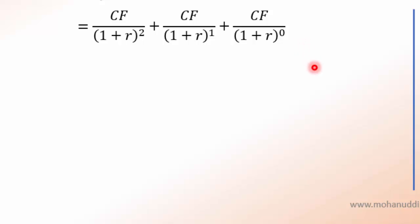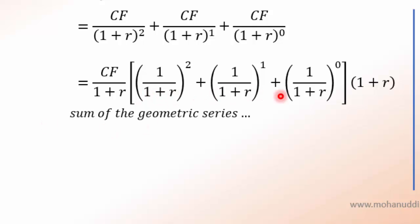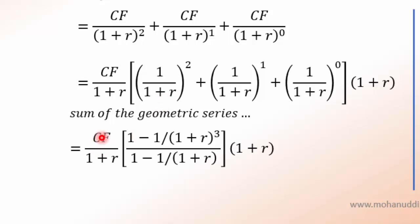What we can do is take a common factor of CF/(1+r) and also (1+r). We are using a little trick so that we can get a similar series to what we obtained when deriving the formula for present value of an ordinary annuity. You can see that this series is the same as what we got for an ordinary annuity. Using the formula for the sum of a geometric series for this portion, the expression becomes CF/(1+r) times (1+r), and this part becomes [1 − 1/(1+r)³] / [1 − 1/(1+r)].